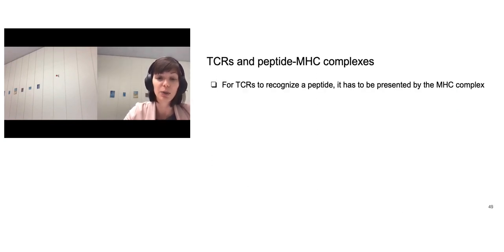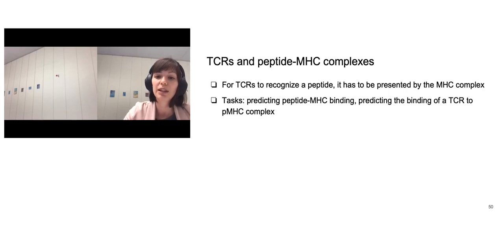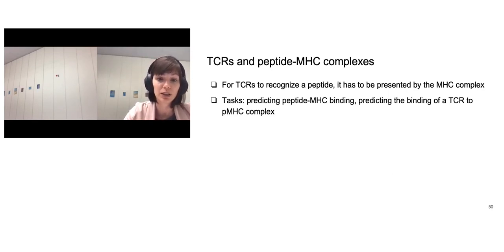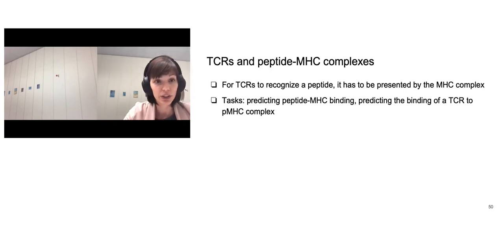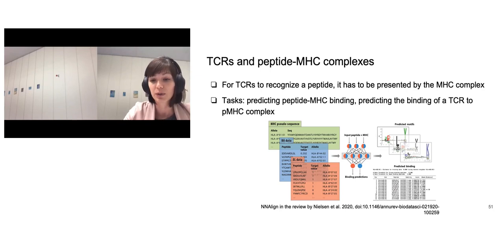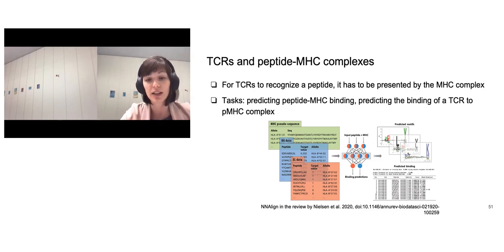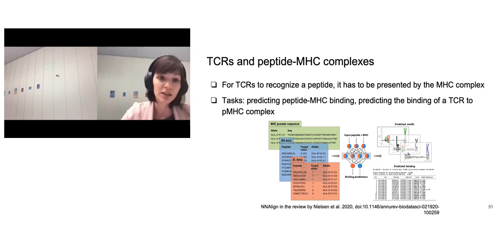Another task we might be interested in is predicting antigen presentation on MHC complexes. We want to predict peptide-MHC binding, and we also want to predict the binding of TCR to the peptide-MHC complex. There are many approaches based on deep learning for this task. As recently reviewed by Nielsen and colleagues, we might want to have different sequence information combined with information from the MHC side, and then be able to combine this information to predict if binding will occur or not.